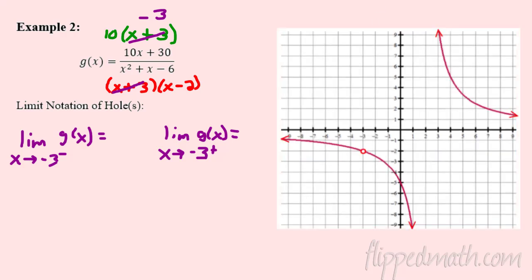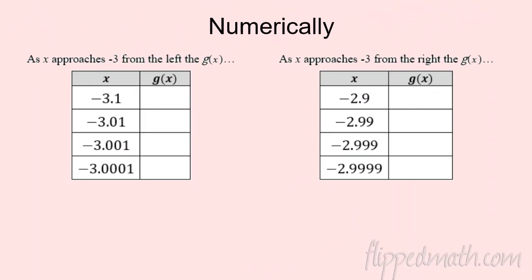I pre-graphed it here — you can pause and draw that in. I can see that as I approach -3 from the left side, the y-value is approaching -2. And as I come in from the right side, closer and closer to -3, the y-value is also approaching -2. So we're just putting some limit notation with the hole right there.